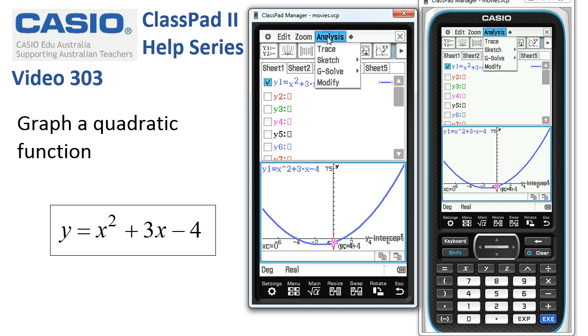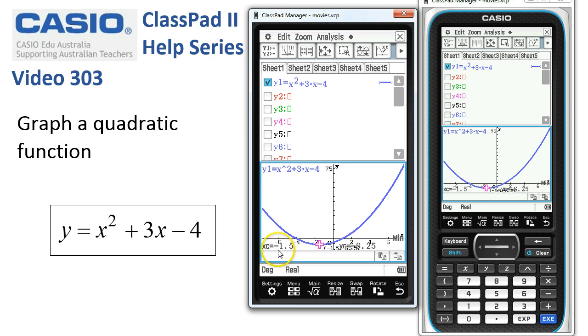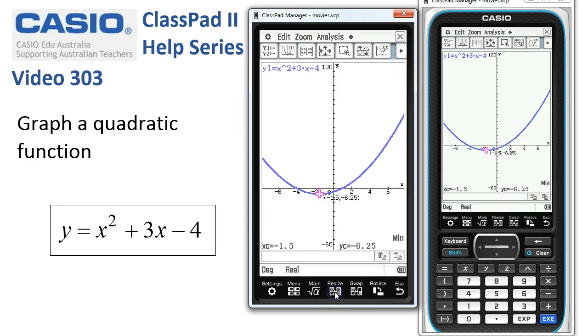At the bottom, we've got analysis, G solve, and it would be a min. On there we can see the coordinates negative 1.5, 6.25. A little hard to see, isn't it? So what we can do is tap resize, and there you can see it's separated out all the writing from each other. Here it is, the coordinates at the bottom of the screen: negative 1.5, negative 6.25.